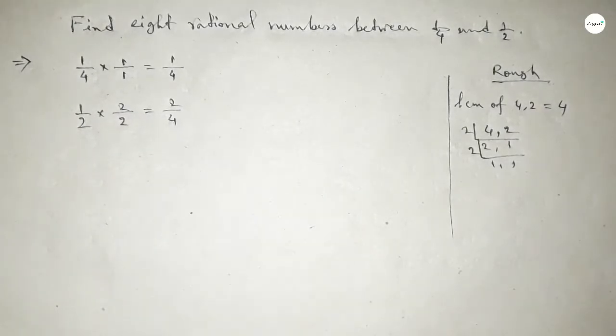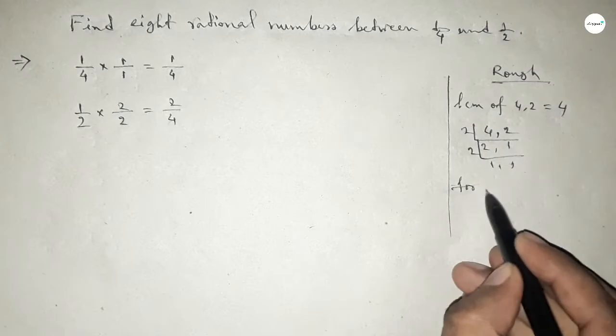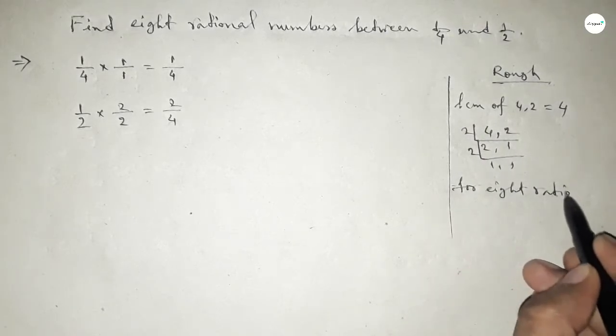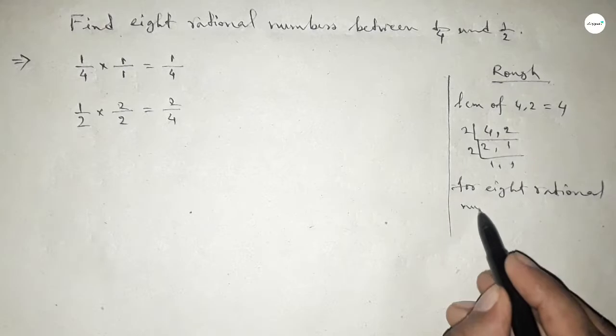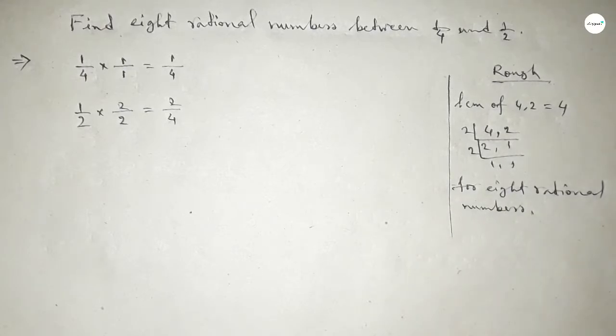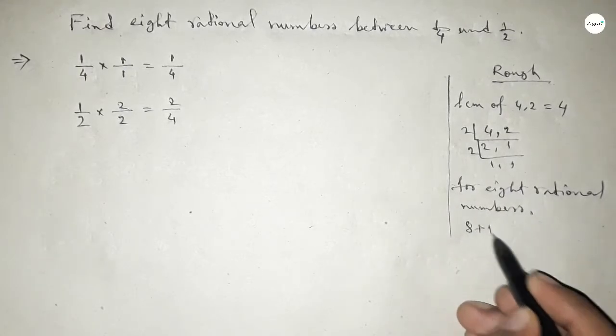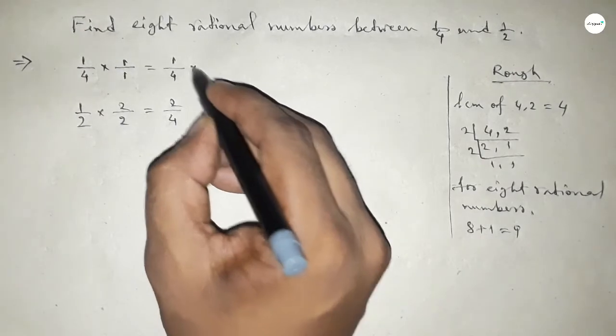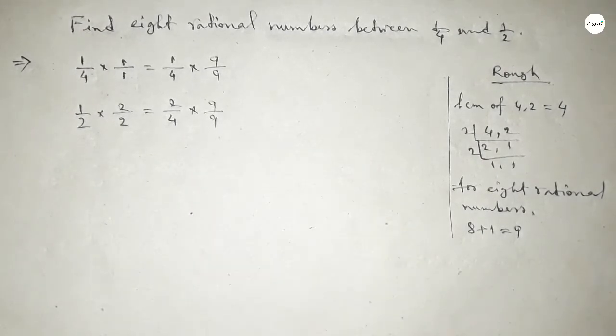Now for finding 8 rational numbers between any two numbers, we have to follow this method. So we should multiply 8 plus 1 equal to 9 with both numbers. By this way, this is 9 over 36 and this is 18 over 36.